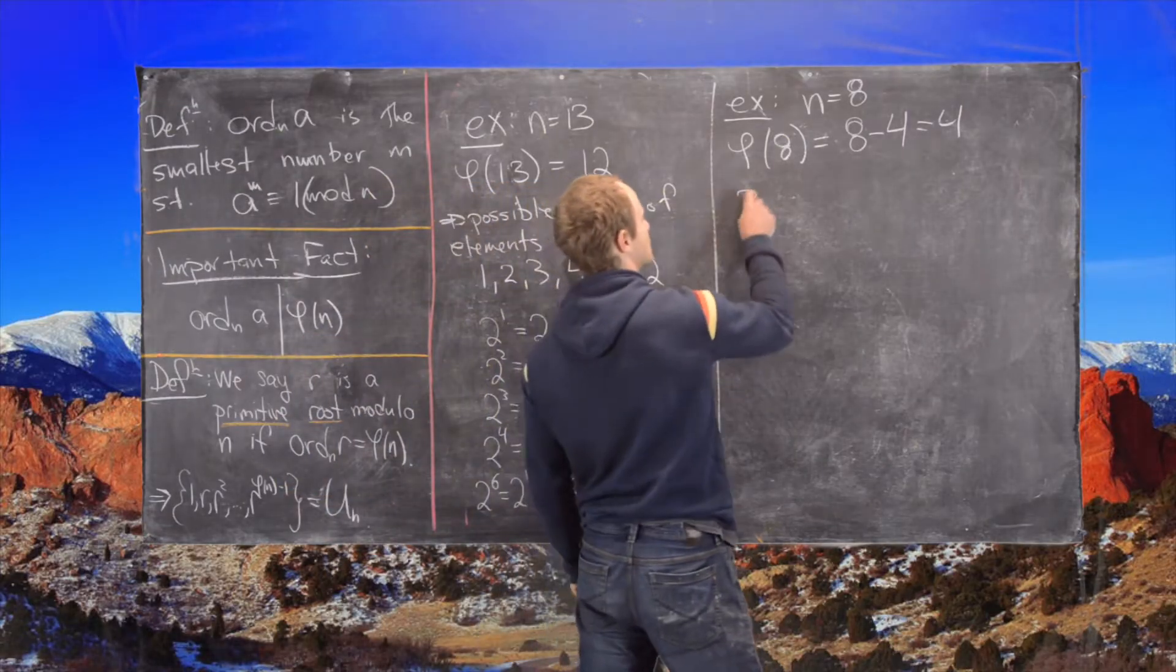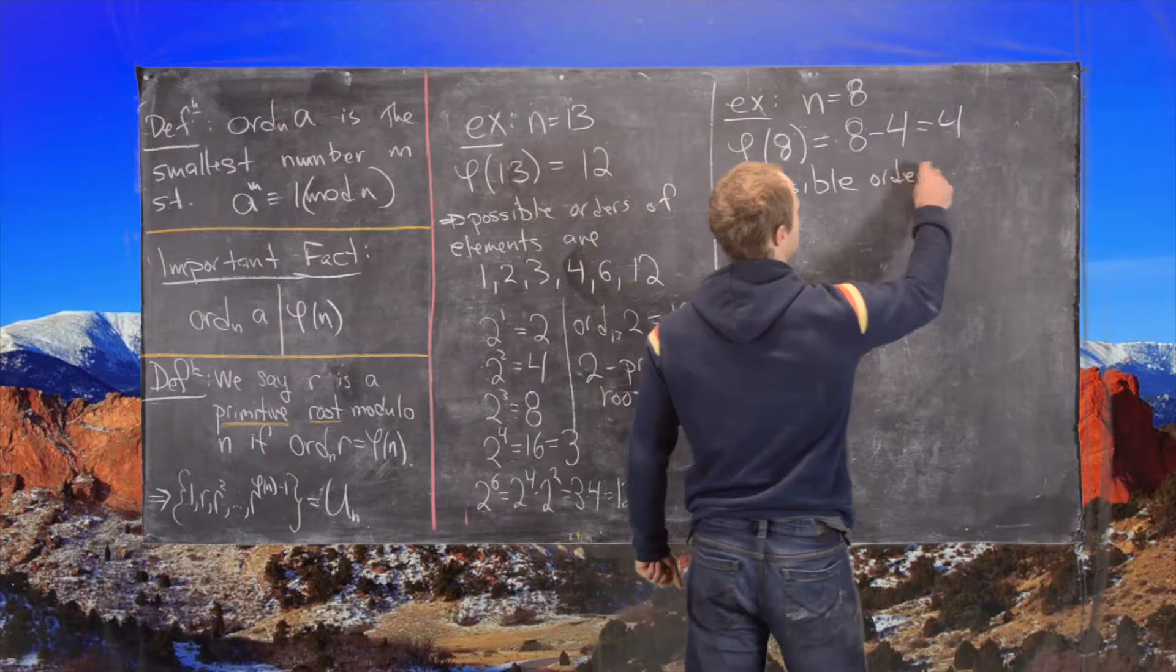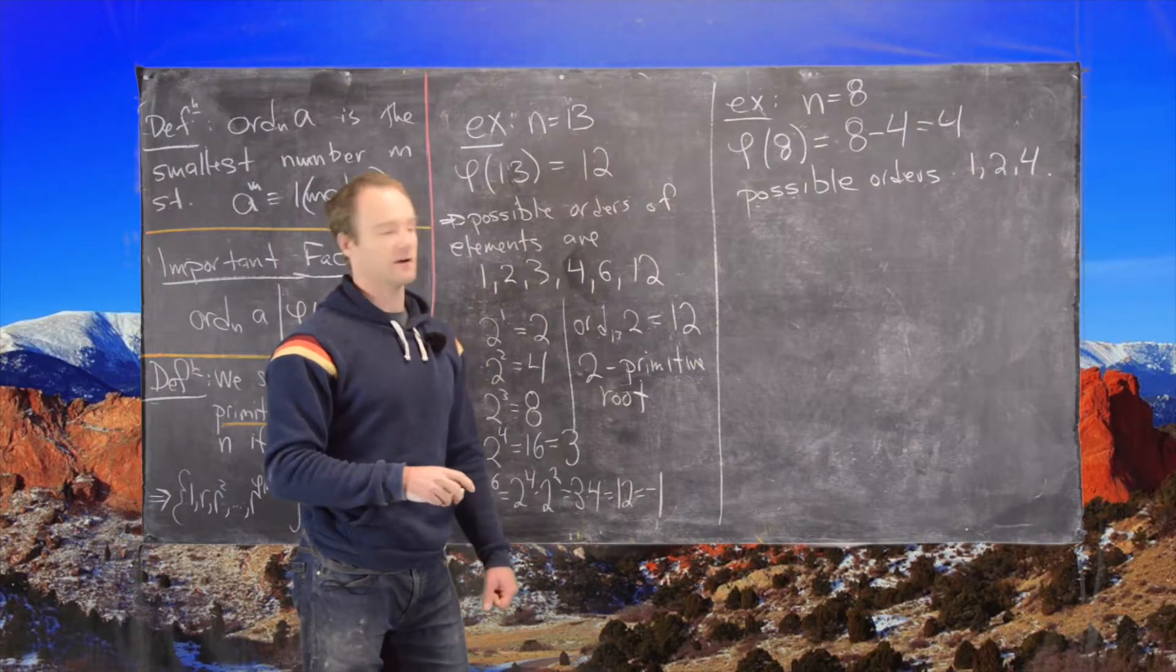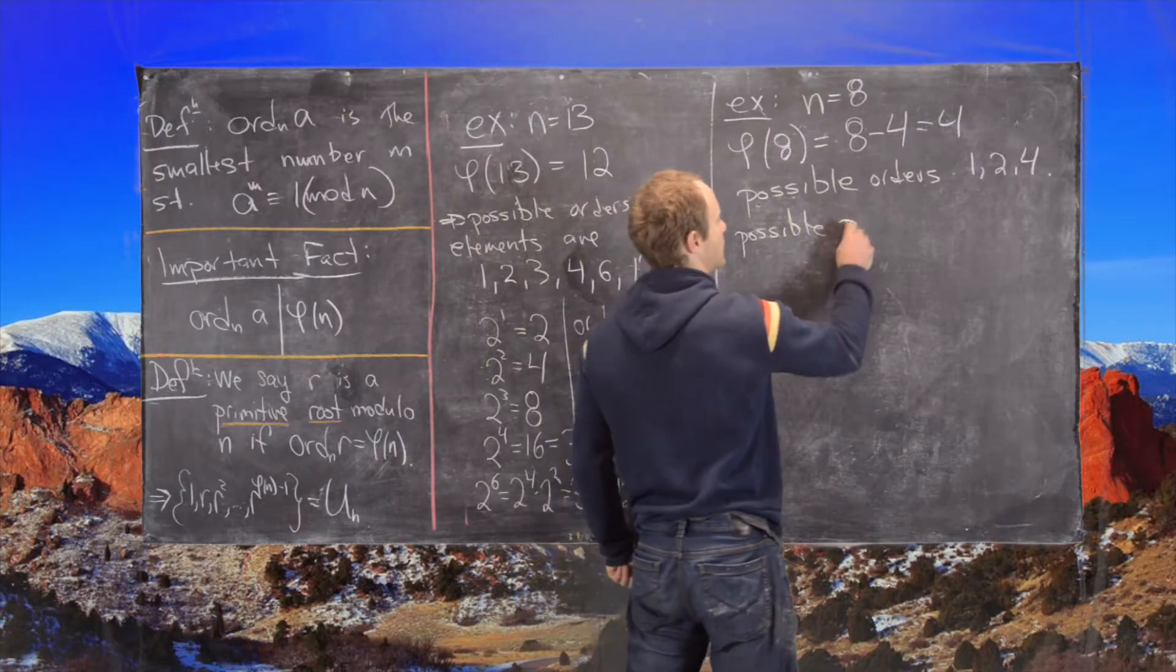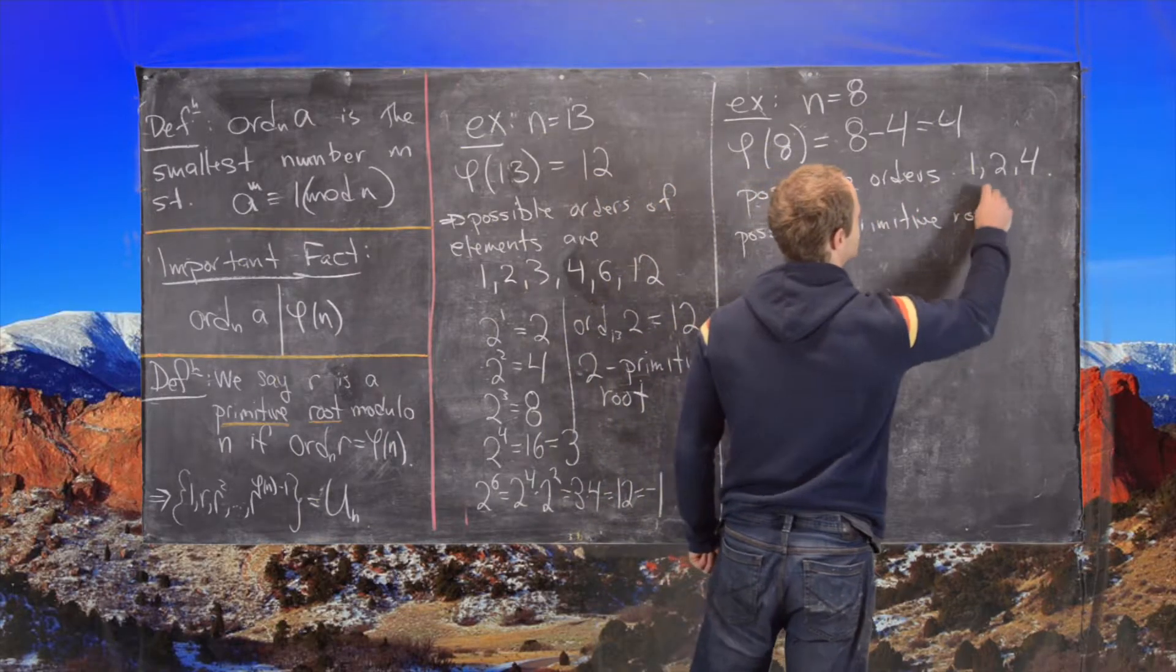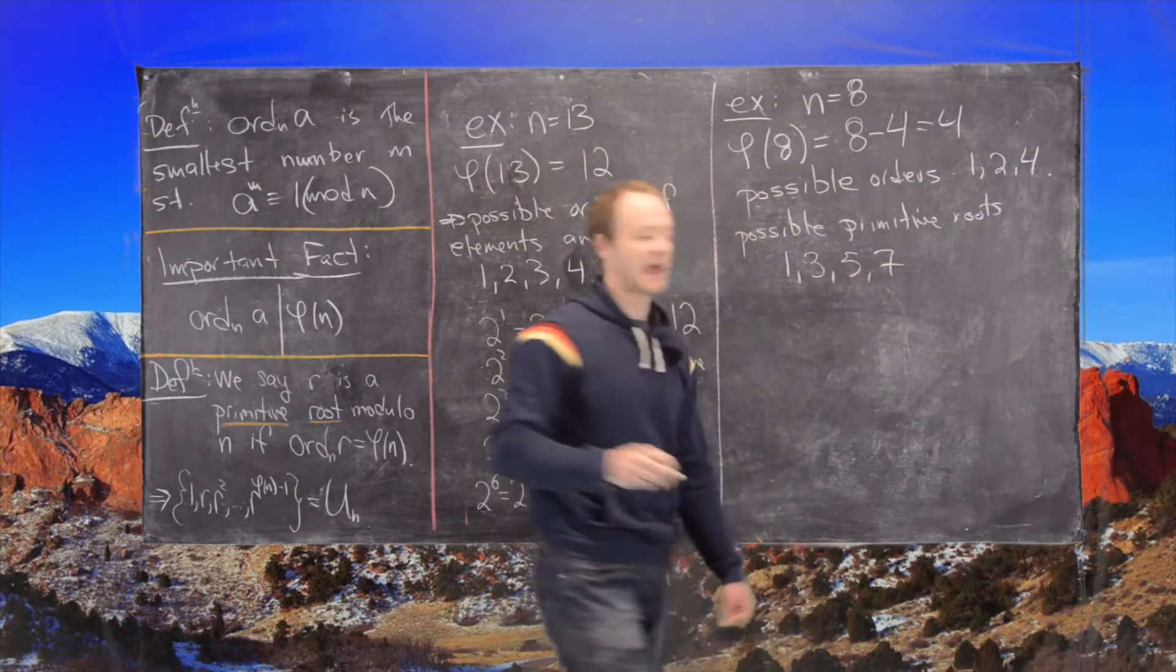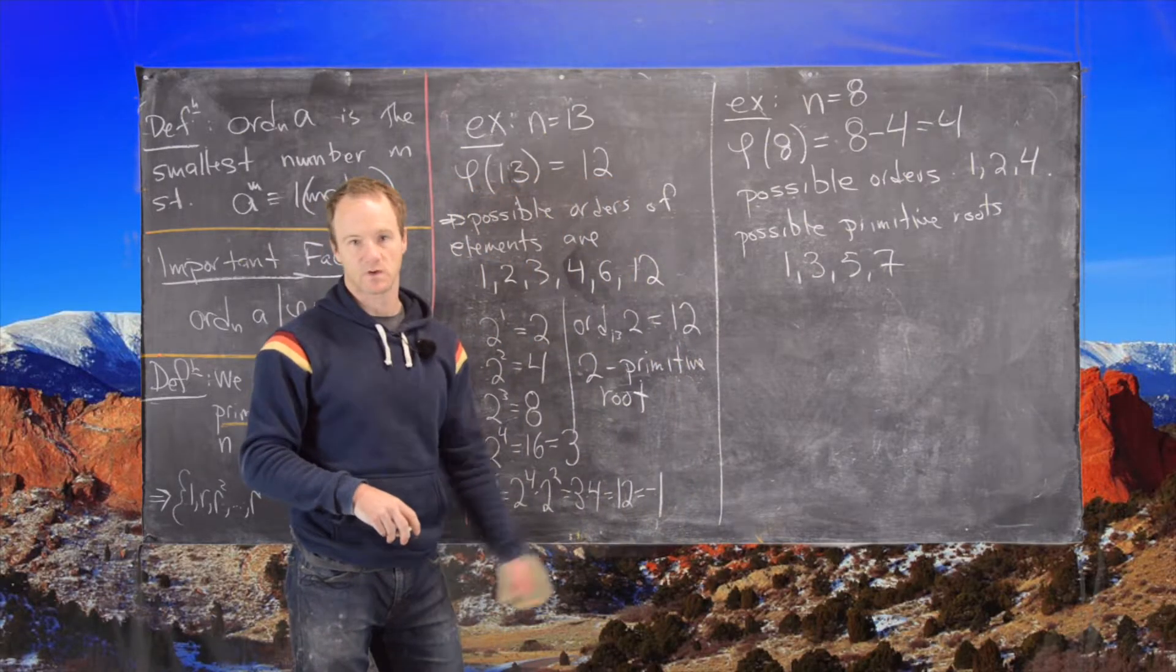So that tells us the possible orders are 1, 2, and 4 because they have to be divisors of 4. And then also the possible primitive roots are 1, 3, 5, and 7 because we have to take numbers that are relatively prime to 8. Great.